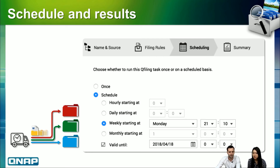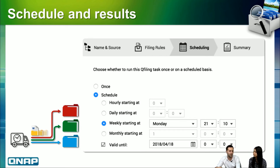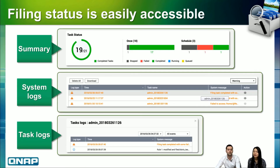After setting conditions, you can move to the scheduling step. We provide daily, weekly, and monthly schedule options, so the reorganization can be scheduled in advance — for example, after one day or one week — to run automatically for you.